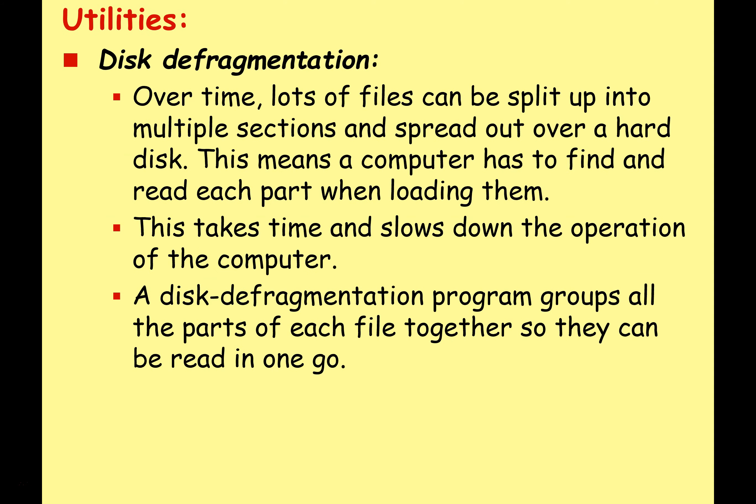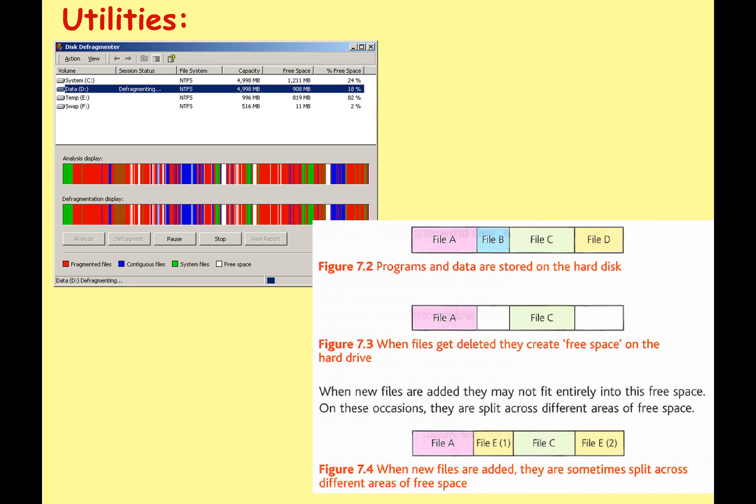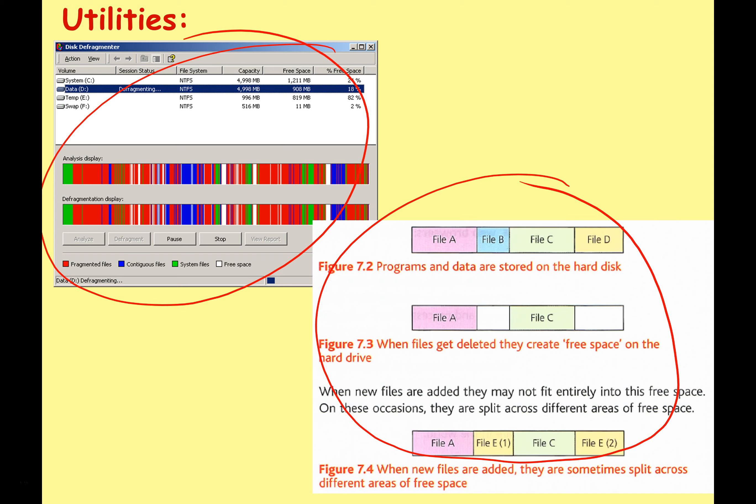Disk defragmentation is about your hard disk drive and keeping it healthy. Over time, lots of files can be split up into multiple sections and spread out over a hard disk, meaning a computer has trouble finding and reading each part of the file, which slows the system down. A disk defragmentation program groups all the parts of a file together so they can be read in one go, and also puts all the free space on your hard drive together so it's more convenient to install the next program.